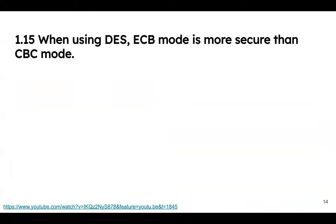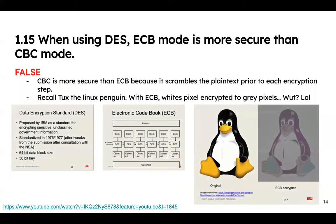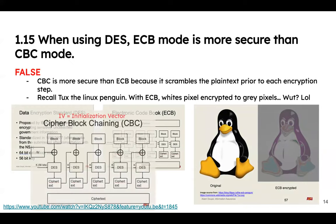When using DES, ECB mode is more secure than CBC mode — false. ECB is the electronic code book mode. He used the example of encrypting a penguin image — the output still shows the pattern, so you can still see it. That's why cipher block chaining is more secure: it scrambles the plain text prior to encryption.